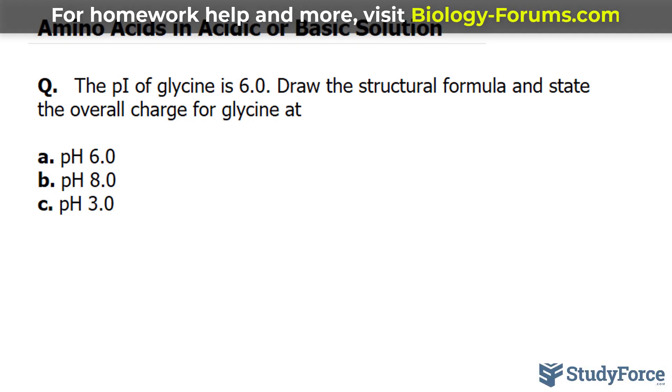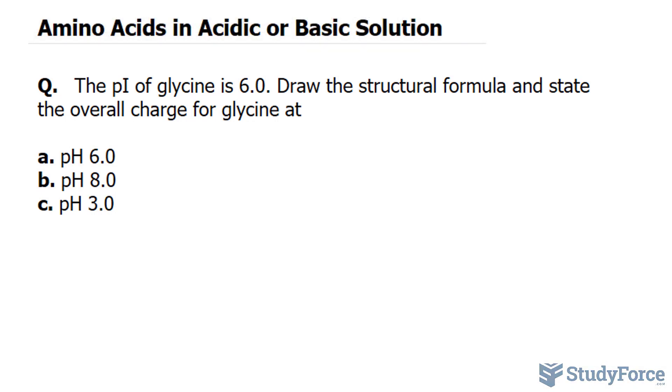We learned that at the isoelectric point, you have a zwitterion forming. A zwitterion is an ionized amino acid where the net charge of the molecule is equal to 0, even though it's charged. So we're told that for glycine, it's at 6, and that's part A.